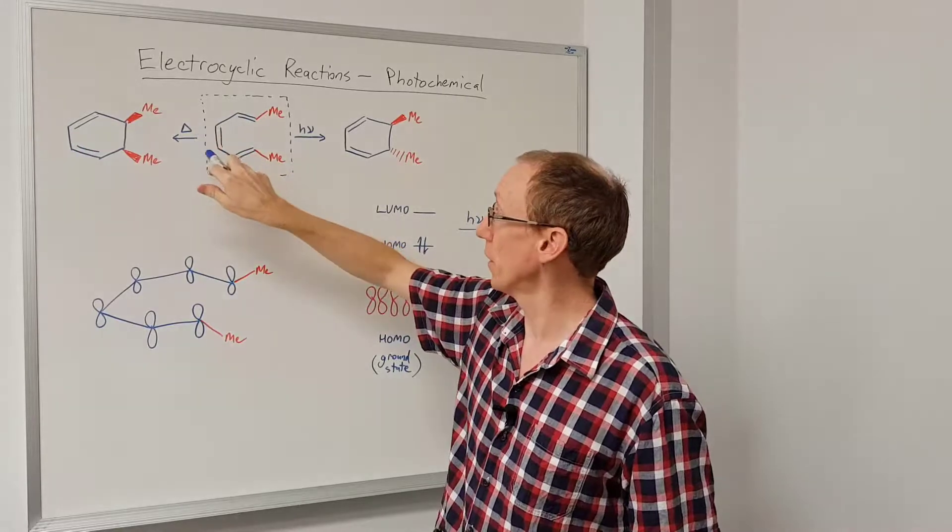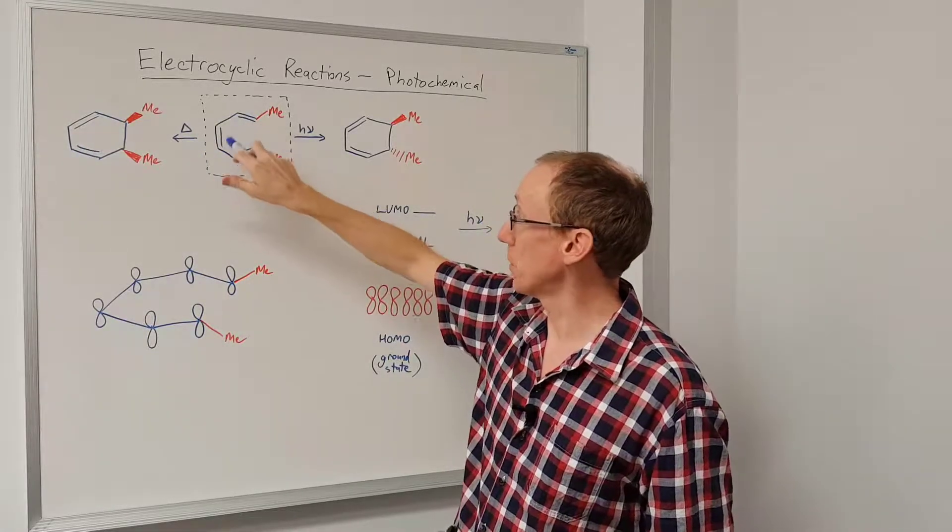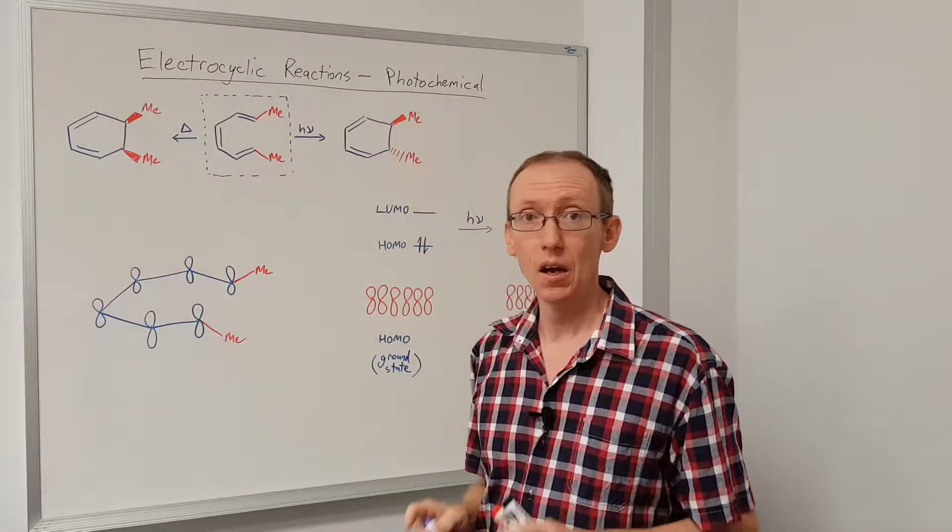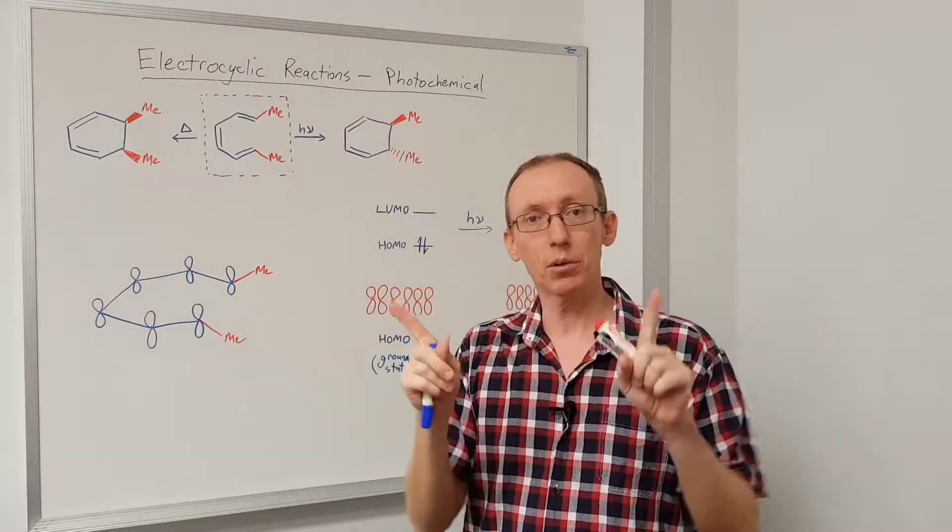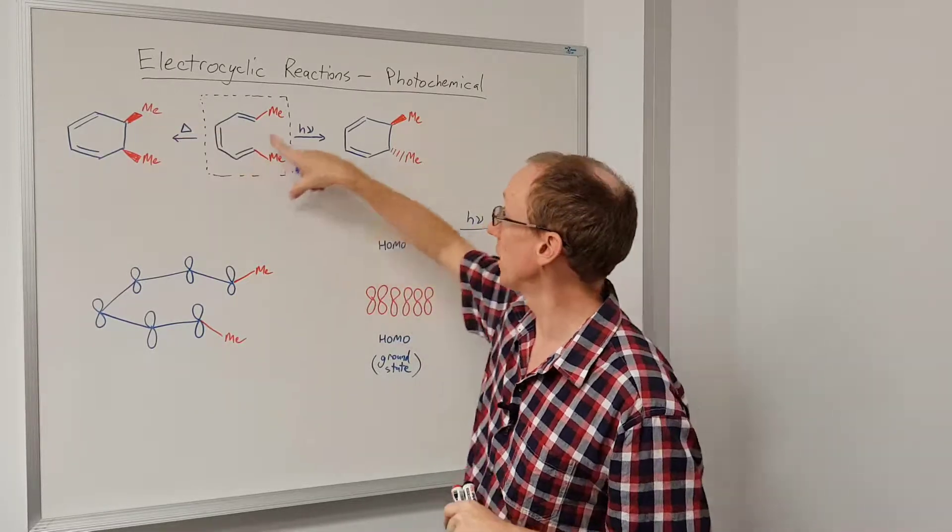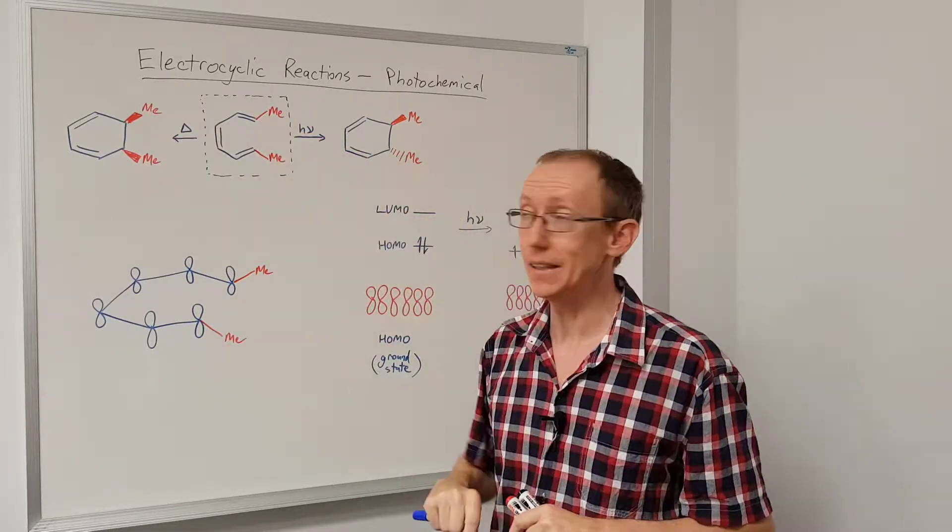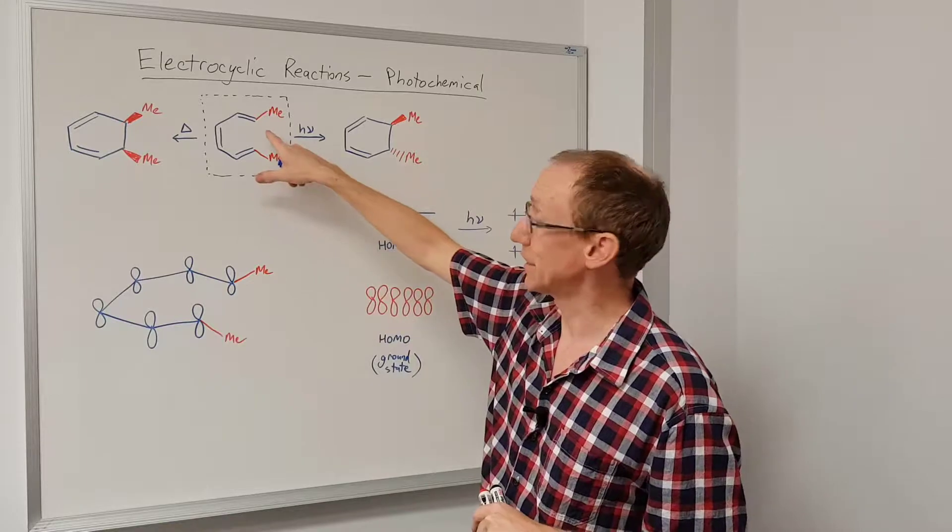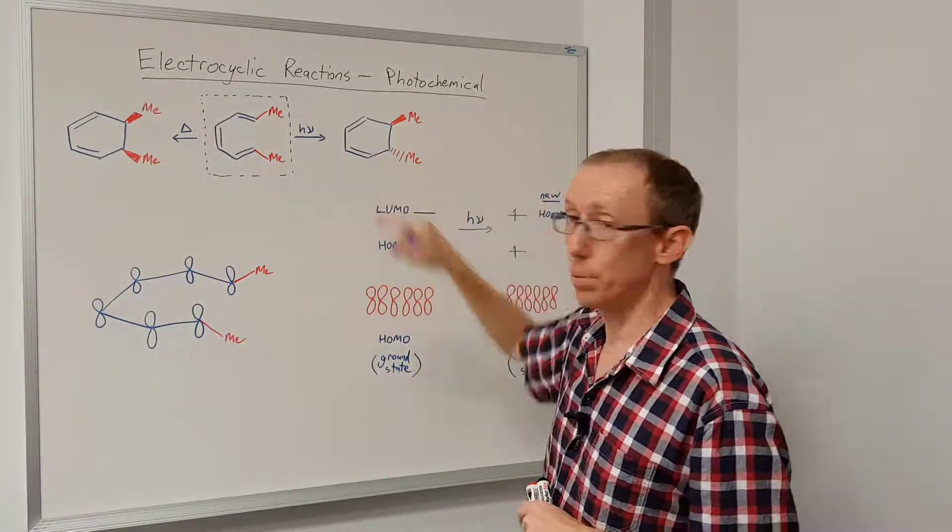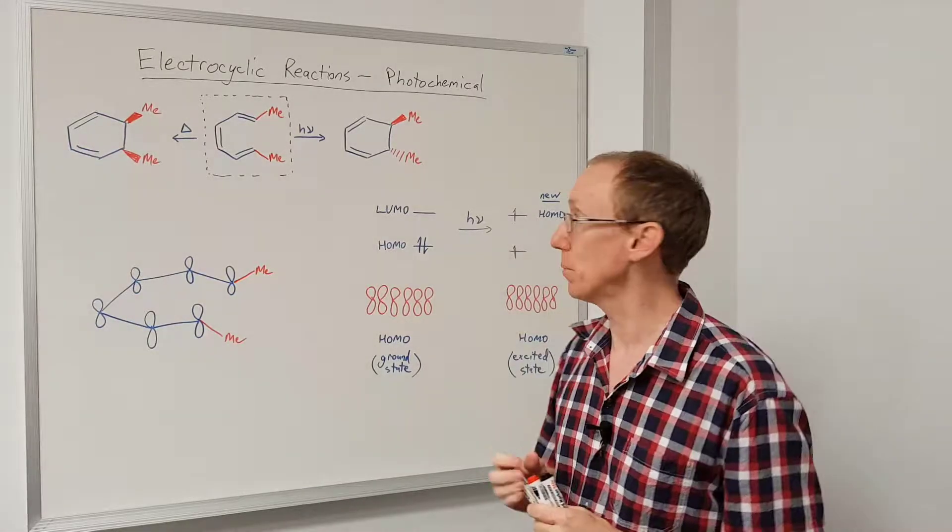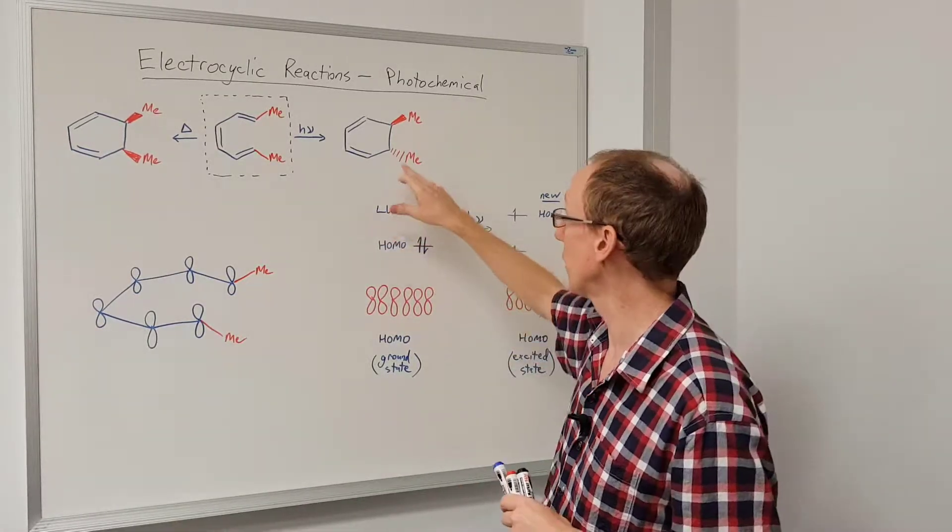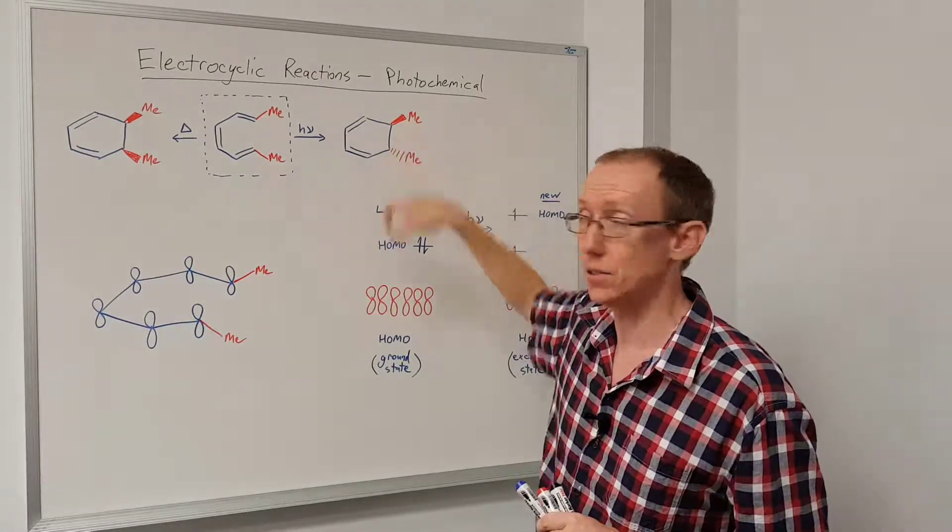I've got a video about those showing how, for example, hexatriene will undergo a thermal cyclization via a disrotatory process to give a cis-substituted compound if we have these two E double bonds. Now if we take the same molecule and we shine UV light on it, then we actually get the opposite diastereochemistry, or the opposite diastereochemical configuration. So we get the trans compound.